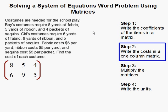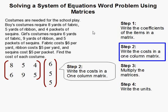You then write the costs in a one column matrix like this. So remember, fabric costs $6, and that corresponds to this.